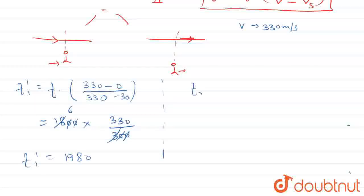find f2 dash. So this would be f into 330, observer is standing so minus 0, divided by 330 minus minus 30. Why am I doing this? Because the source is moving away so its sign is negative.